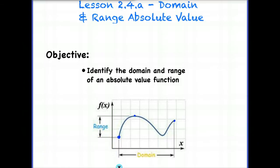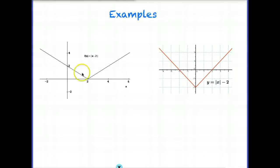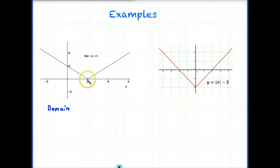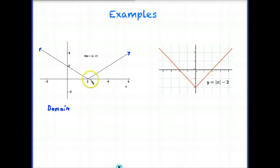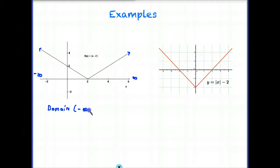Here we have an absolute value equation, and if you'll notice, it has been shifted to the right. You can see the equation up there. So if we're going to write domain, our domain is all the x values that this function will have. The x values are going to go from positive 2 to the left indefinitely, because this is not an endpoint — it's always assumed to be an arrow. It's a line and it goes on forever. Same with the right side, so from 2 on to the right it continues forever. Our domain ranges from negative infinity all the way to positive infinity.